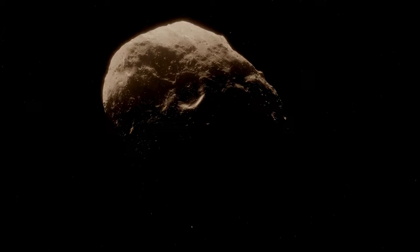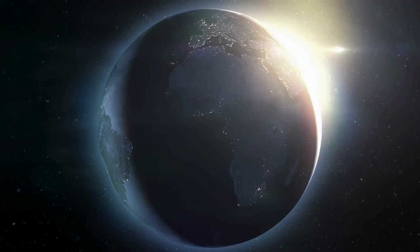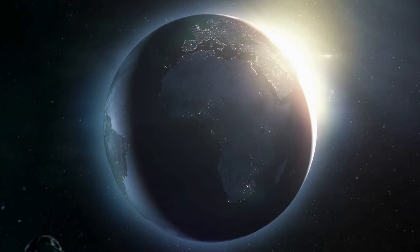The chilling aspect of the Chelyabinsk incident lies in its stealthy approach. It caught everyone off guard. The asteroid remained undetected until it breached Earth's atmosphere, largely due to its trajectory from the direction of the sun, concealed by its blinding radiance.